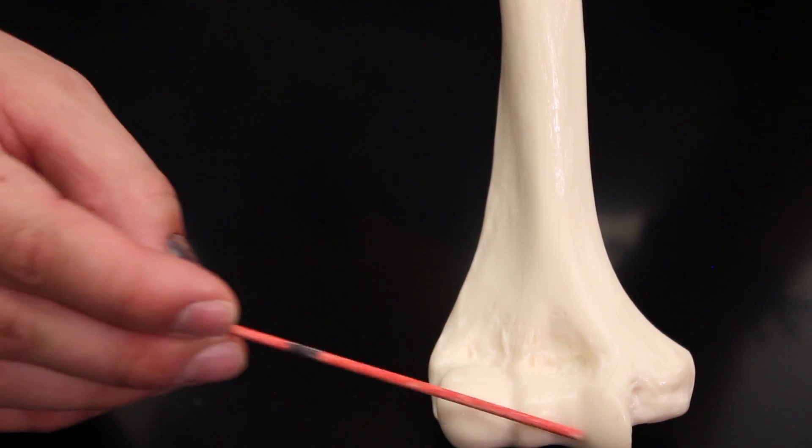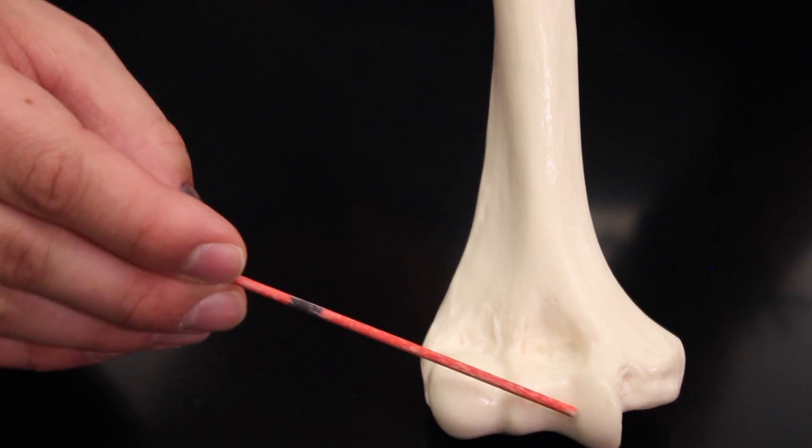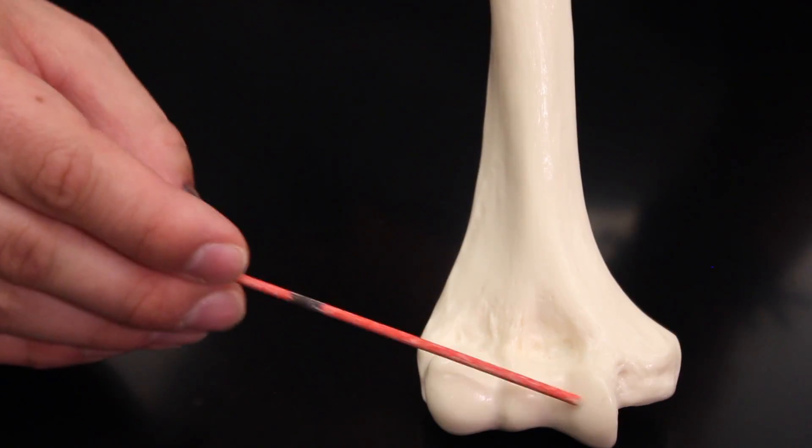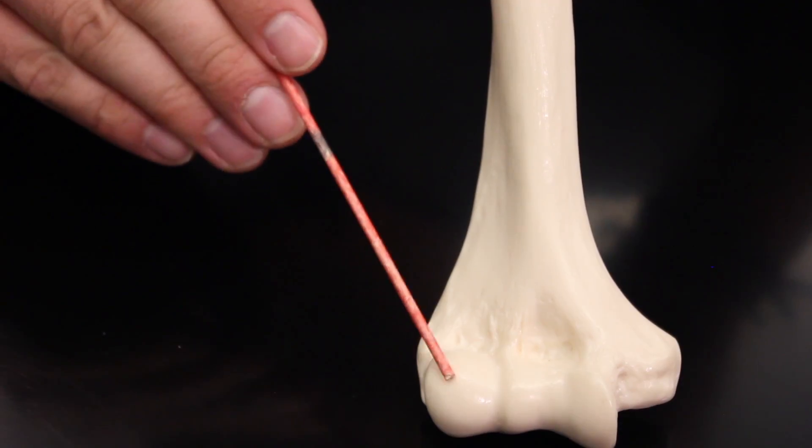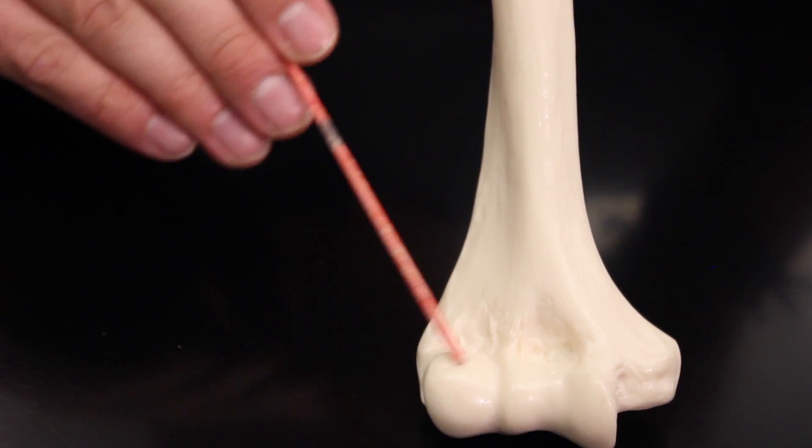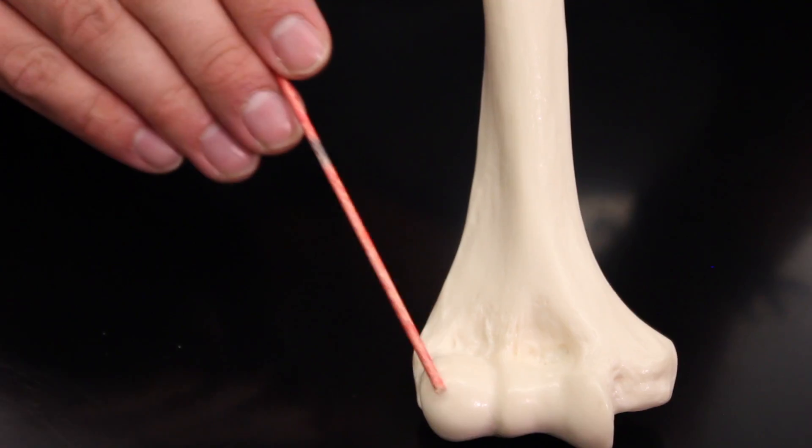This is the medial side of the bone, so this is actually technically you can call it the medial condyle. But we actually have a specific name for it, we call it the trochlea. Then over here we have the lateral condyle, but again we give this a specific name, we call it the capitulum.